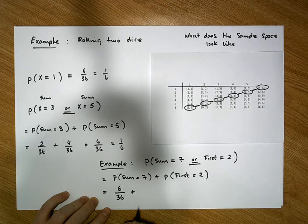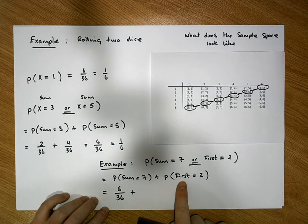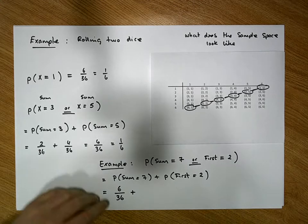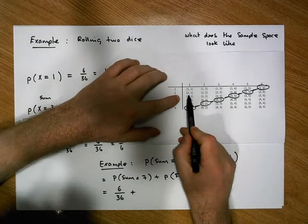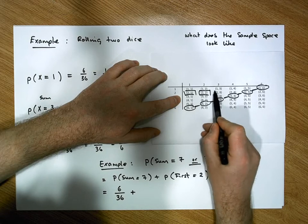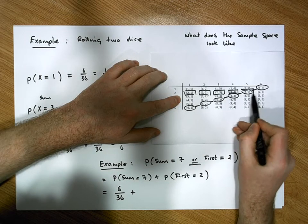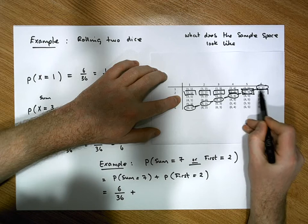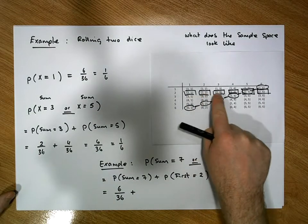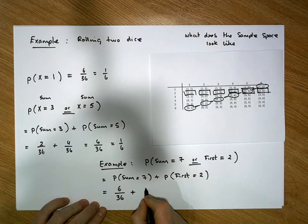For the second event — the probability that the first die equals two — those are (2,1), (2,2), (2,3), (2,4), (2,5), (2,6). Again we have six chances out of 36.